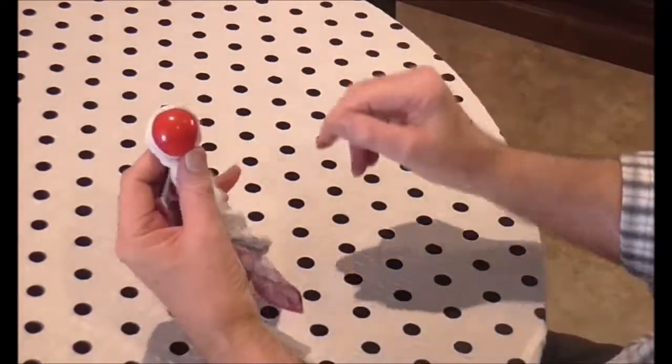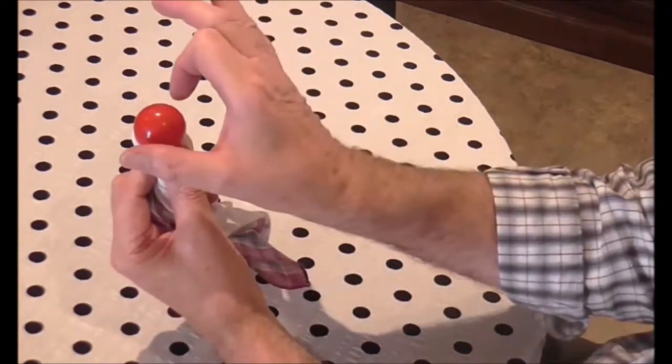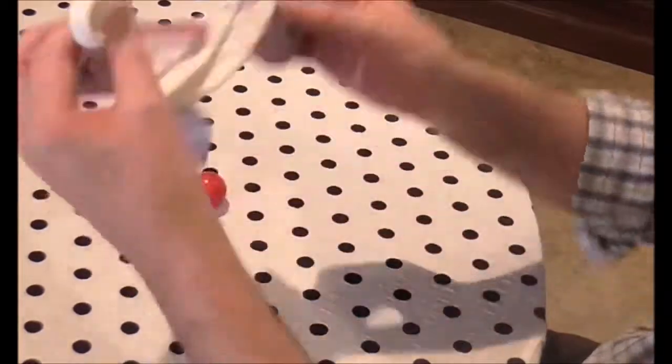Then with a little magic pass, you push with your thumb so it appears that the ball is coming right through the handkerchief. It's really just at the back of the handkerchief. Then you shake the handkerchief out to show that it's complete in all respects.